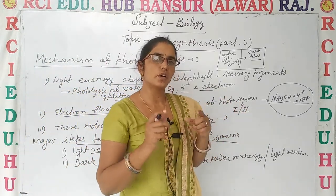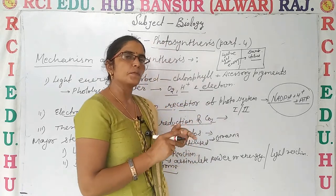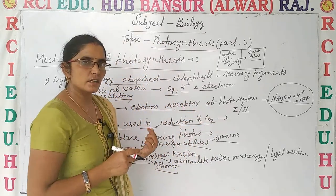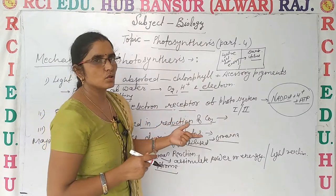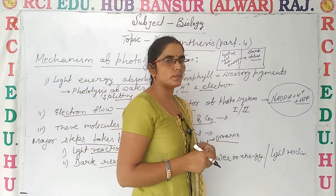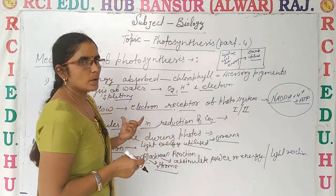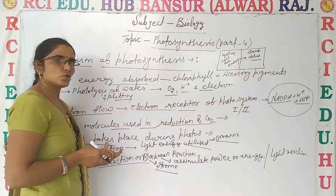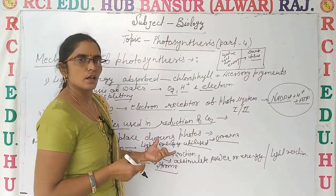The ATP and NADPH energy is then used to reduce CO₂ and produce photosynthate. To summarize, the two major steps are the light reaction and the dark reaction.